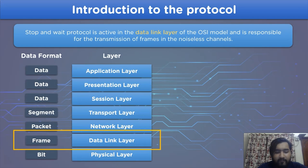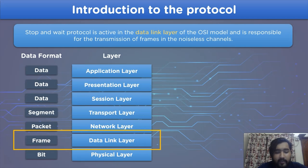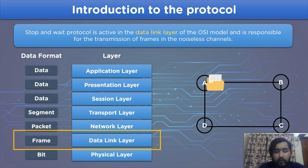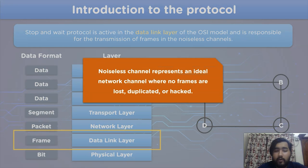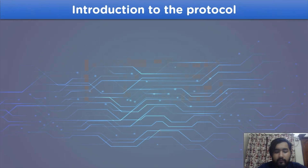The stop-and-wait protocol is a type of flow control mechanism active in the OSI model at the data link layer. The transmission of data applies only to noiseless channels, where a noiseless channel represents an ideal network channel where no frames are lost, duplicated, or hacked.